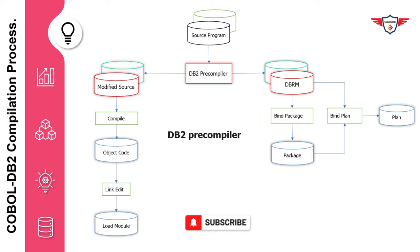The modified source code is compiled like a normal COBOL program. To generate a load module, you need to perform two important steps: first, compile, and second, link-edit the modified source code that is generated by the DB2 precompiler.